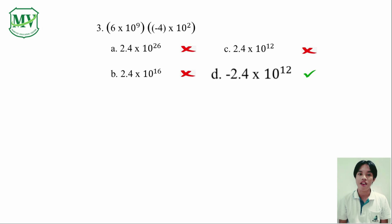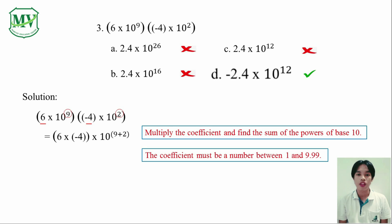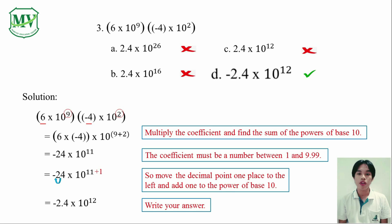Let's pretend that we don't have any choices and we need to do the solution. We just need to follow the same step from problem number 1: multiply the coefficients and add the powers. Your answer is not yet final if the coefficient is not a number between 1 and 9.99, so we still need to do some adjustments. Move the decimal point one place to the left, then add 1 to the power of base 10. Negative 2.4 times 10 raised to the power of 12 is our final answer.